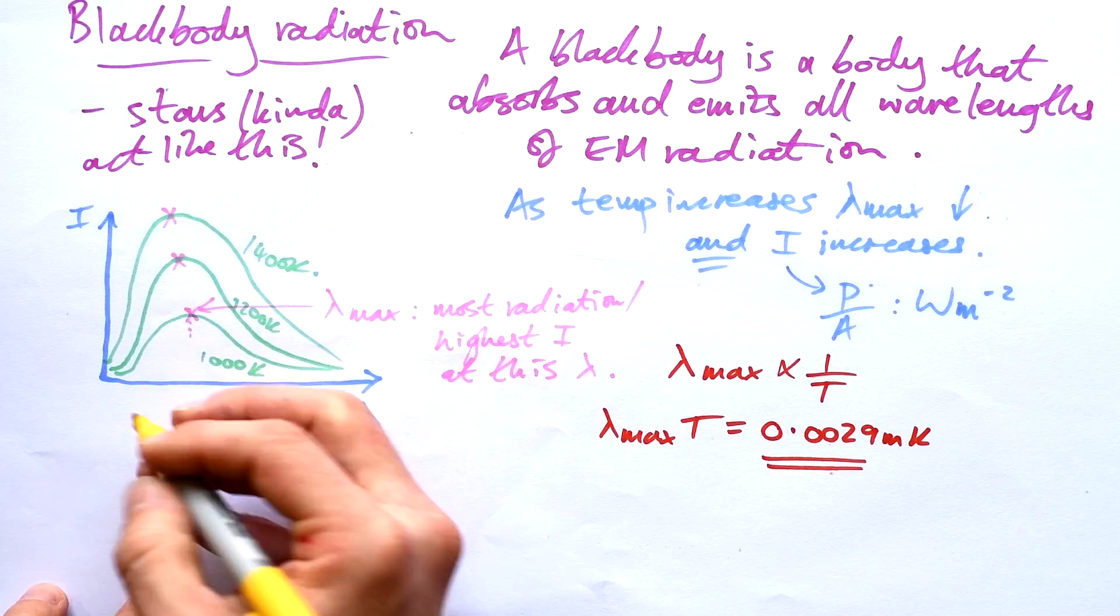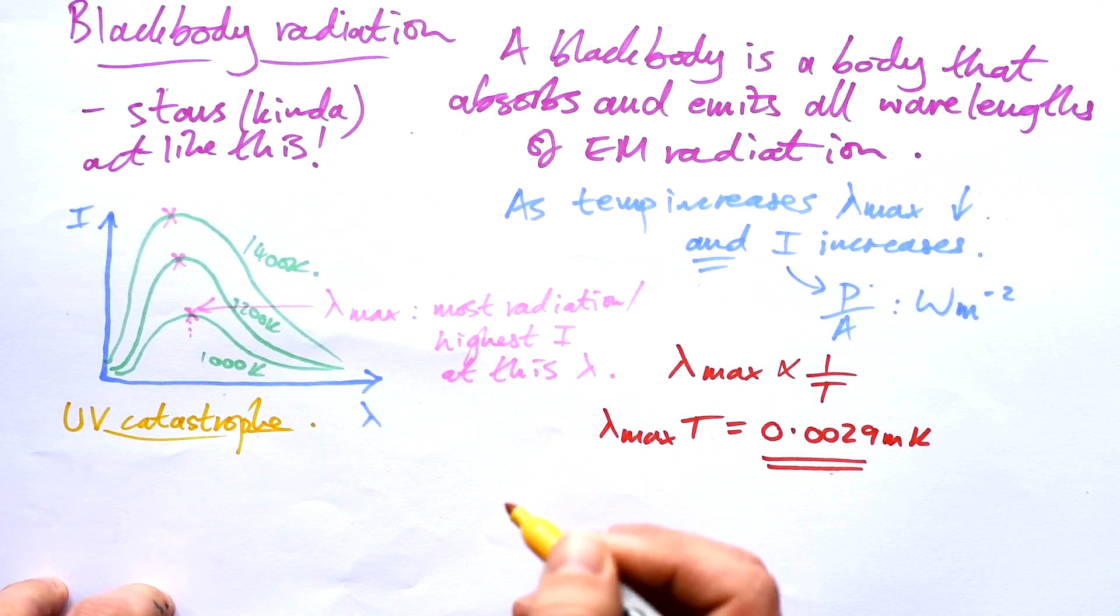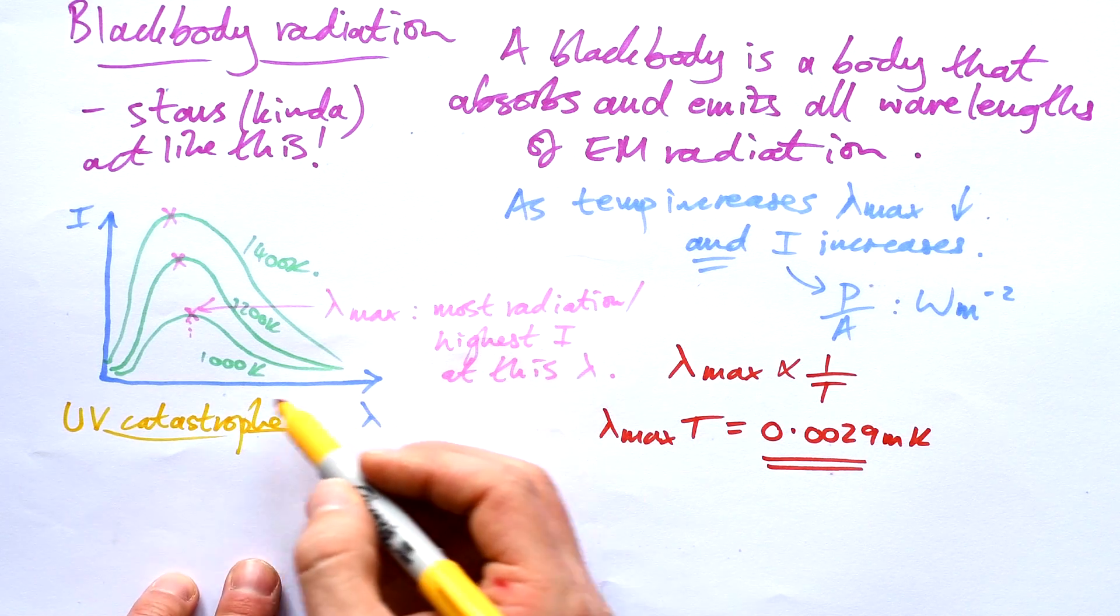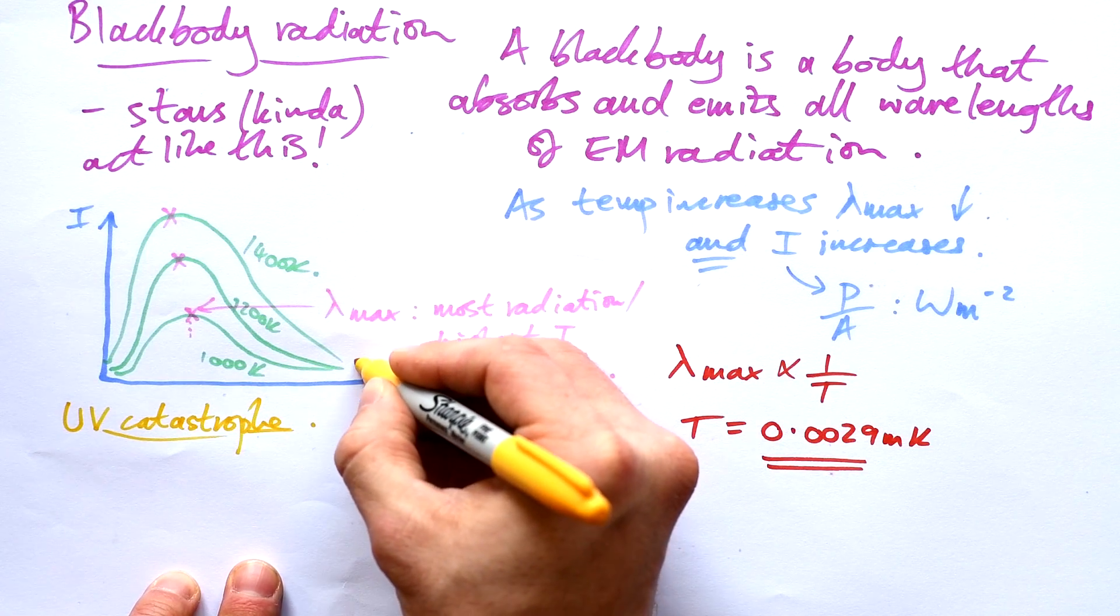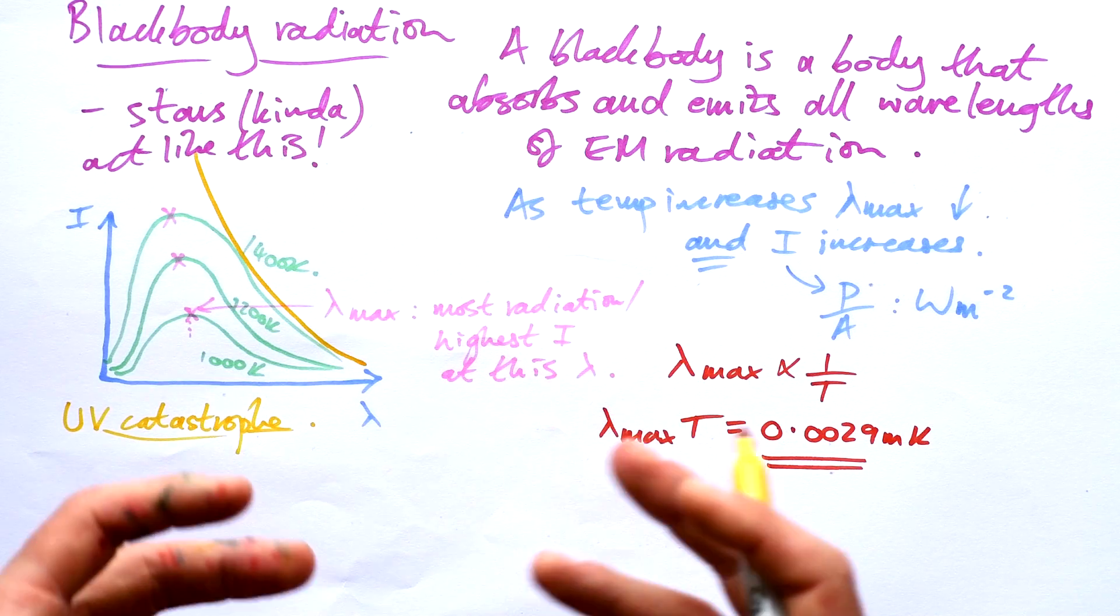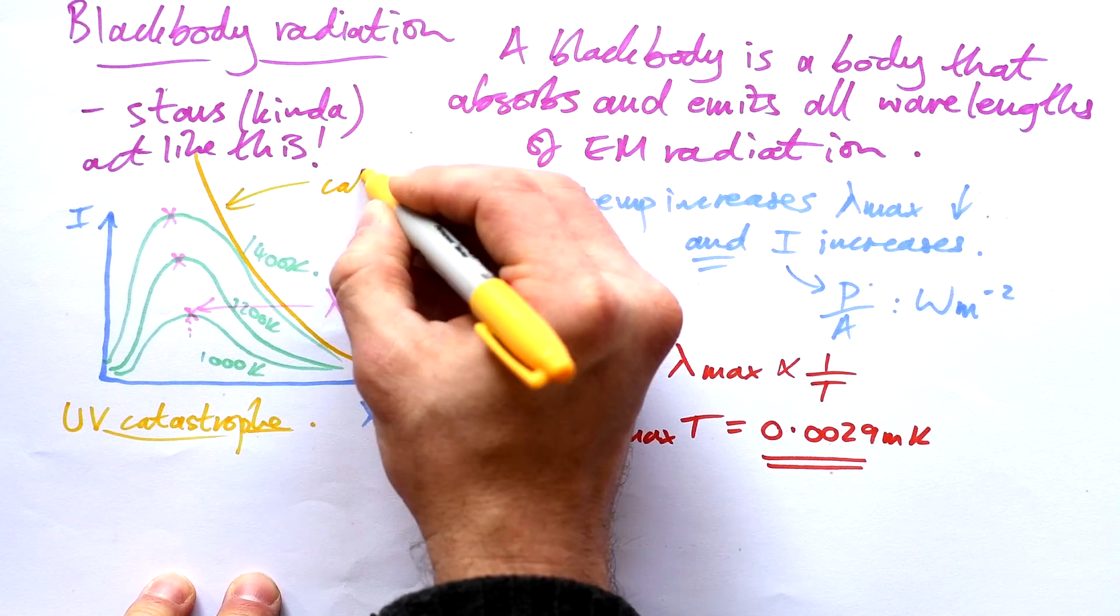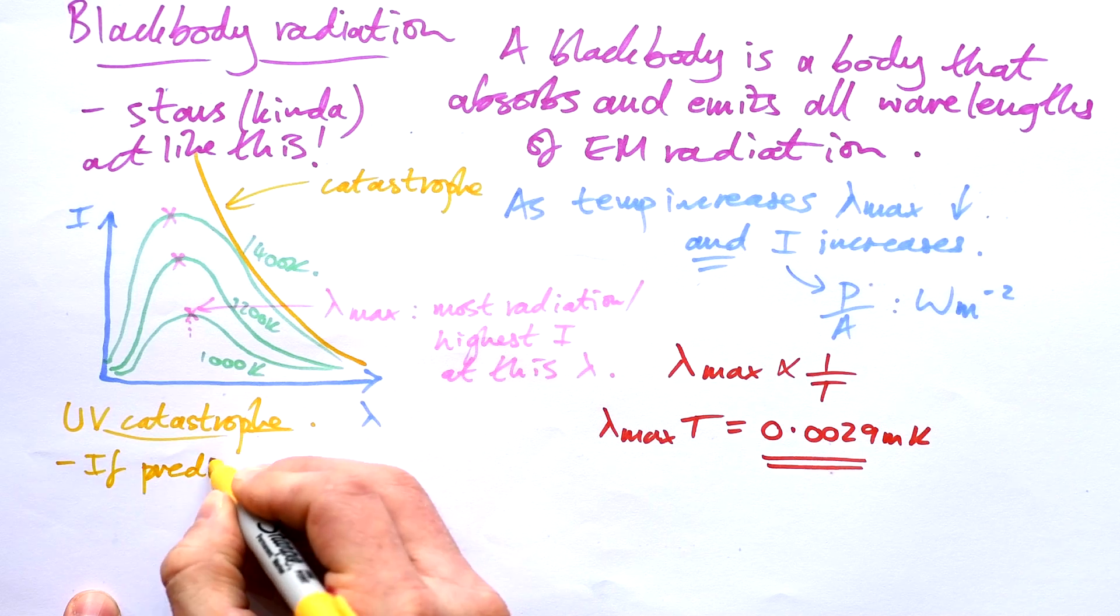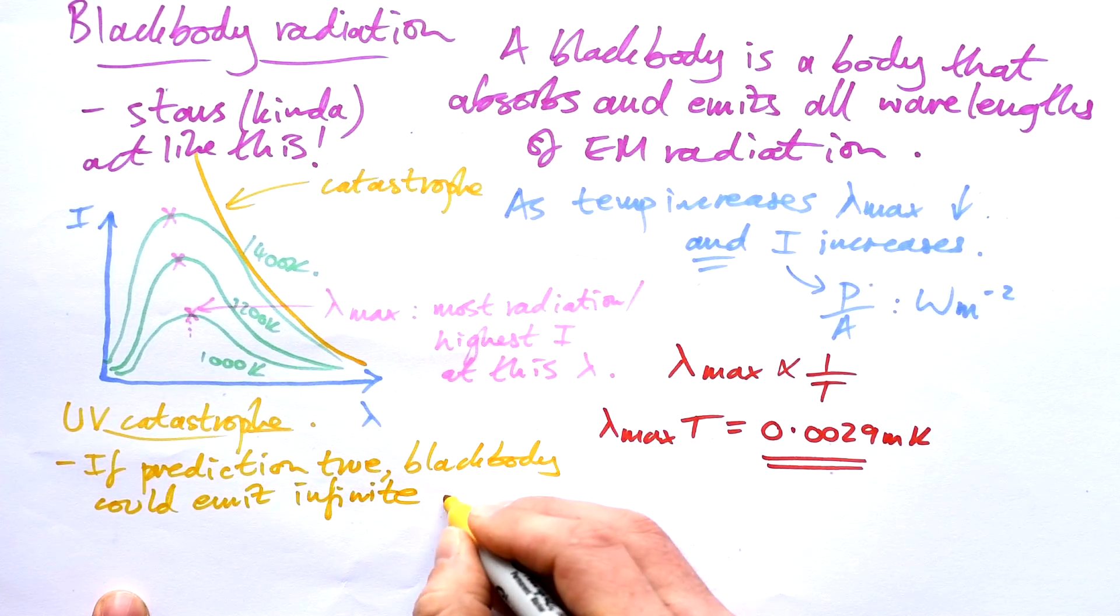Now there's one more thing that I need to mention, and that is the ultraviolet catastrophe. Sounds dramatic, doesn't it? But basically, the classical view of wavelengths says that as the wavelength decreases, the intensity should increase. And so what we should see is something like this, because it seems like it should be the case that shorter waves means more energy in those waves. This is the catastrophe here. And it was called a catastrophe because if this prediction was true, then a black body could emit infinite energy.